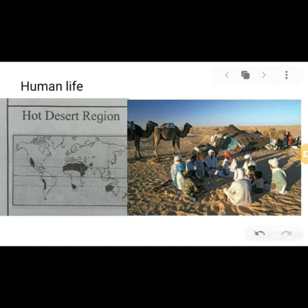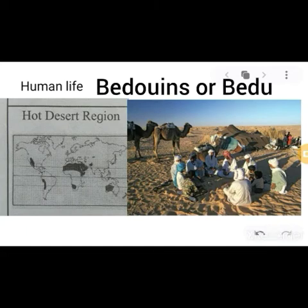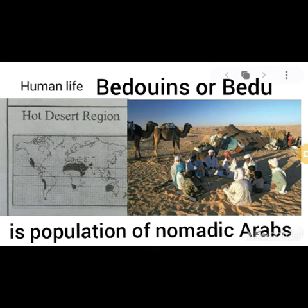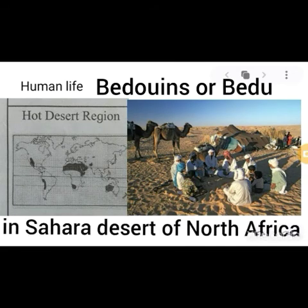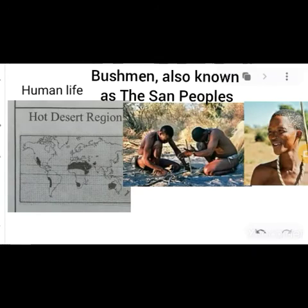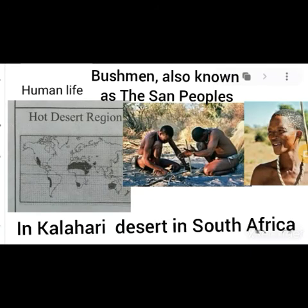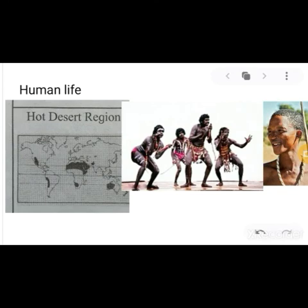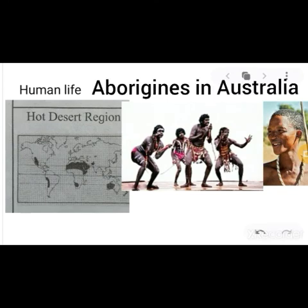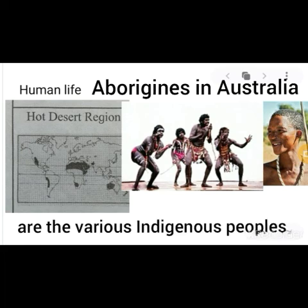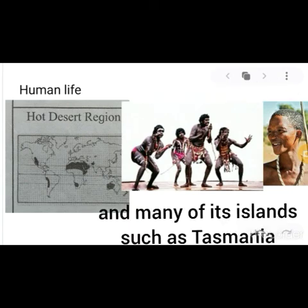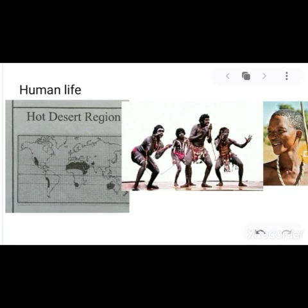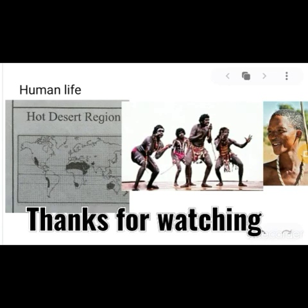Bedouins are a population of nomadic Arabs who have historically inhabited the Sahara Desert in North Africa. Bushmen, also known as the San people, are found in the Kalahari hot desert in South Africa. Aborigines in Australia are the various indigenous peoples of the Australian mainland and many of its islands such as Tasmania. Such populations are seen in the hot desert region.